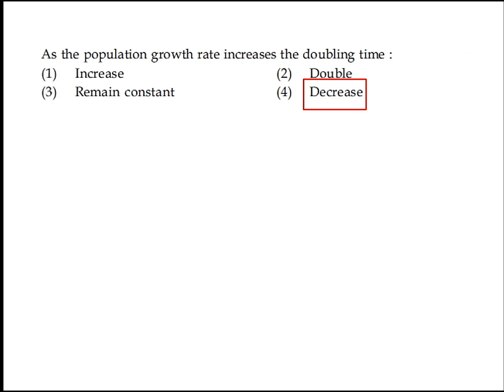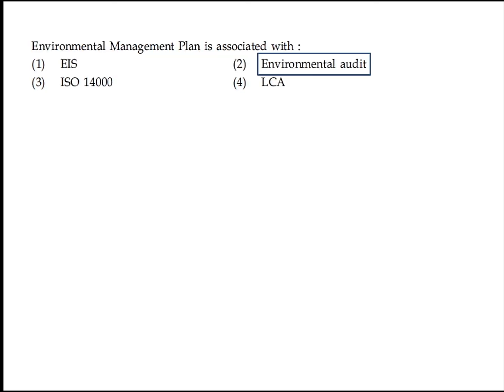As a population growth rate increases, the doubling time will decrease. Option 4 is the right answer. Environmental management plan is associated with environmental audit. Option 2 is the right answer.